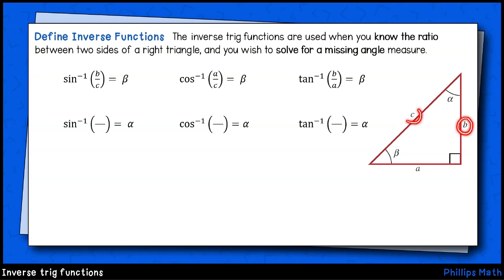For example, the inverse sine of b over c gives the angle opposite of side b. The inverse cosine of a over c gives the angle adjacent to side a. The inverse tangent of b over a gives the angle opposite of side b and adjacent to a.